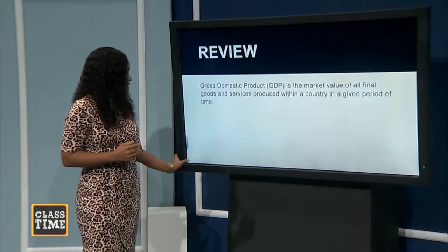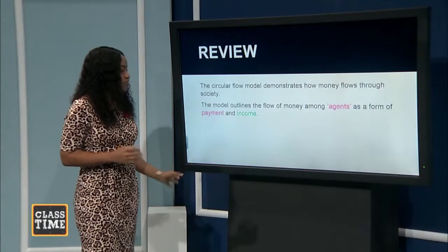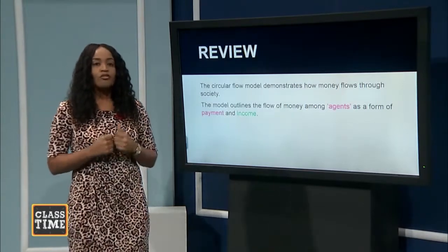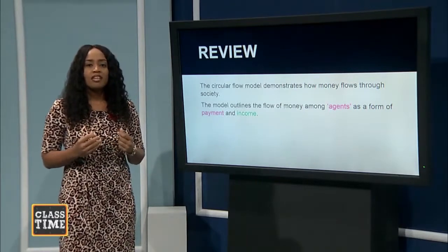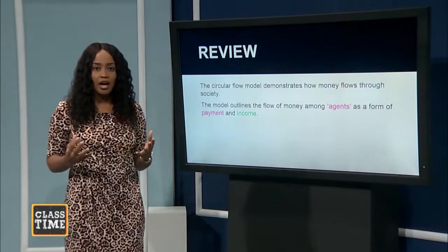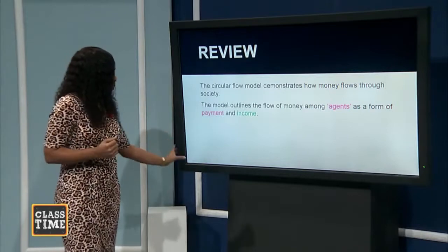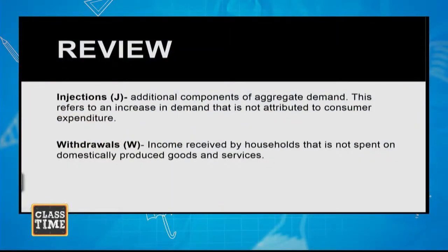Before we do that, we're going to do a quick review of some of the key things from last week. The circular flow model seeks to explain the flow of money in an economy in terms of income and payments. The economic agents concerned with the circular flow included households and firms for a two-sector model, and the expanded circular flow had four agents: households, firms, the international sector, and government.